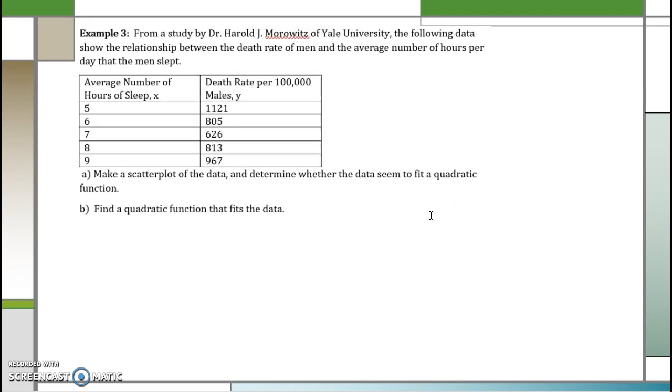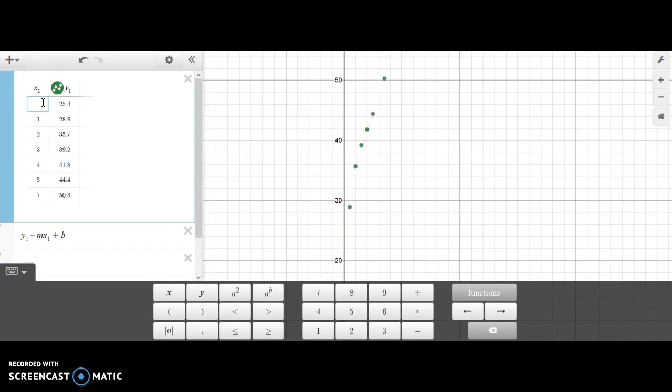From a study by Dr. Harold Morowitz of Yale University, the following data show the relationship between the death rate of men and the average number of hours per day that the men slept. So x represents the number of hours and y represents the number of death rates per 100,000. Let's make a scatter plot of this data and decide whether the data seem to fit a quadratic function.